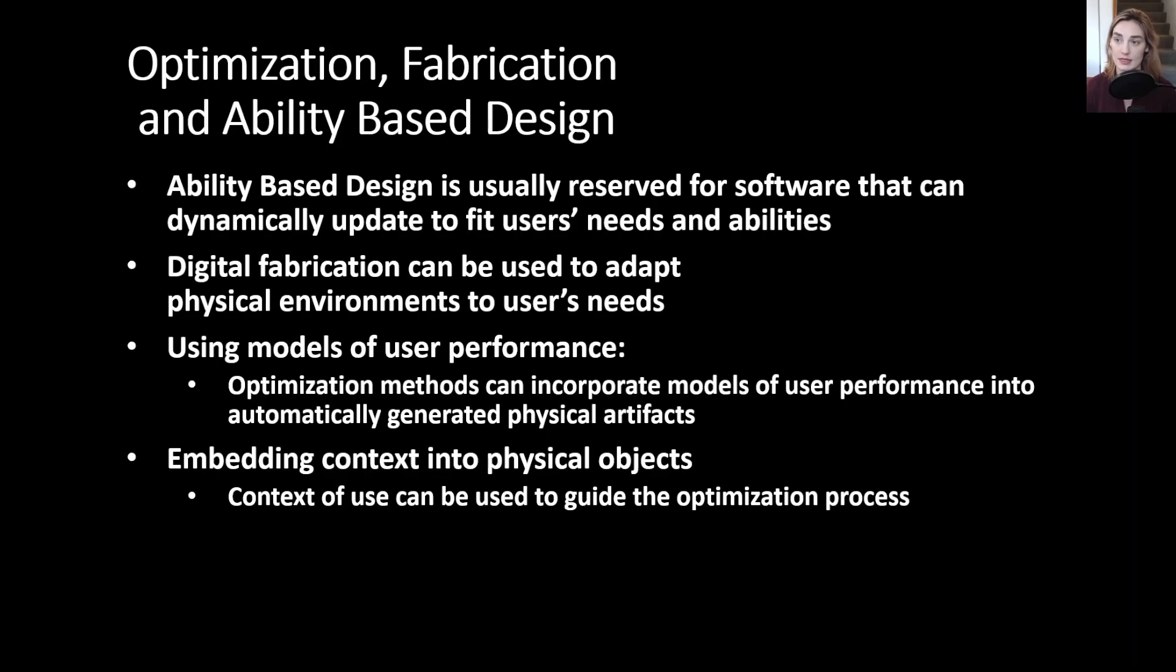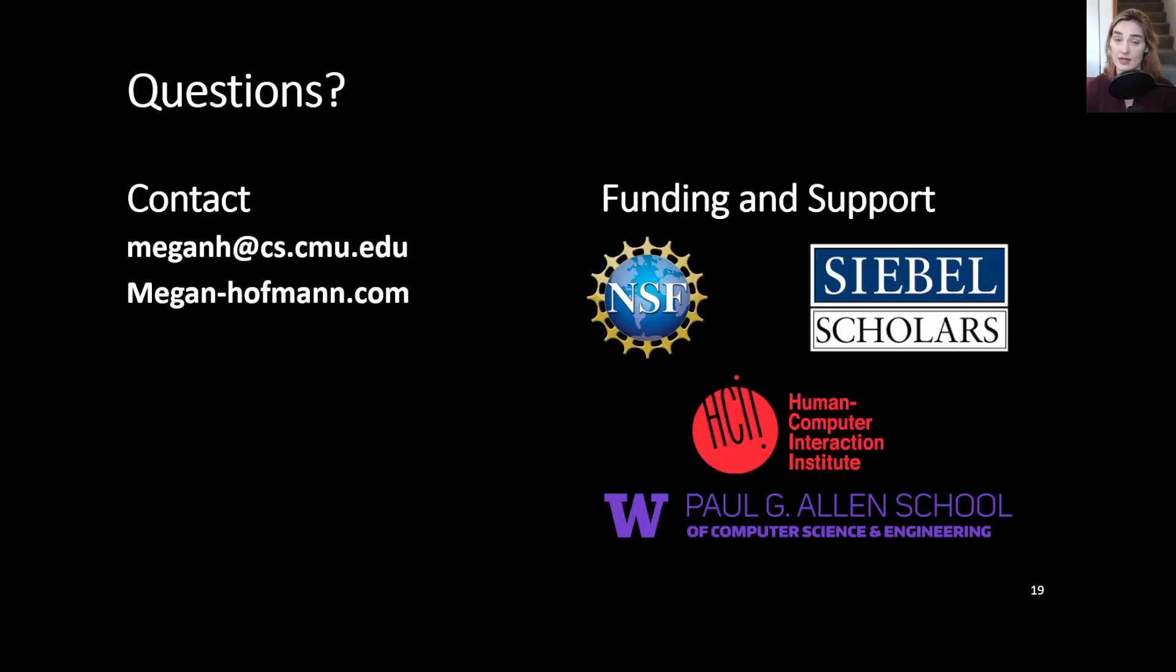Using models of performance, in this case information value, attention cost, and communicativity, we can optimize different tools to incorporate models of that user performance into automatically generated physical artifacts. We can also embed different contexts into those physical artifacts, in this case geographic context. Thank you for your time and if you have any questions feel free to reach out at meganh.cs.cmu.edu.